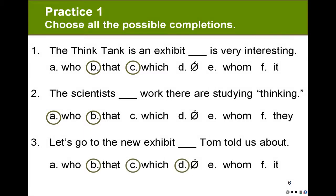Here our choices are B, that, C, which, D, or nothing, because exhibit is a thing and this is an object adjective clause. Tom is the subject of the clause and told is the verb.